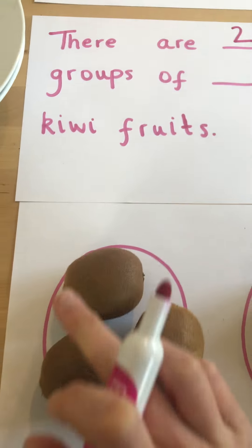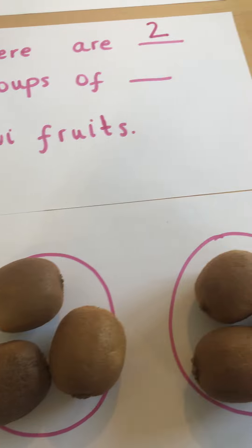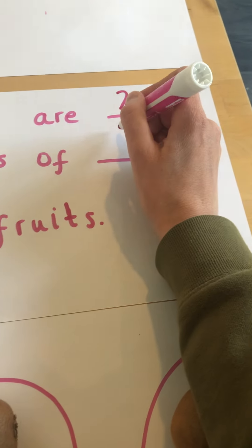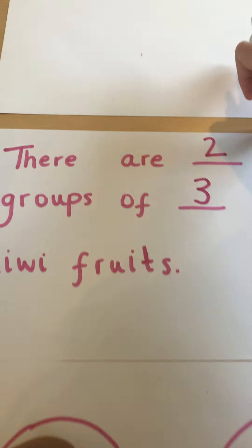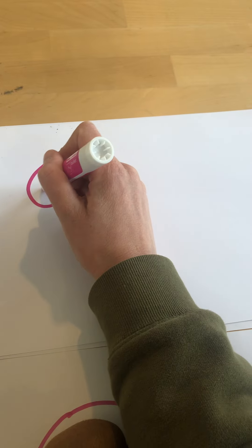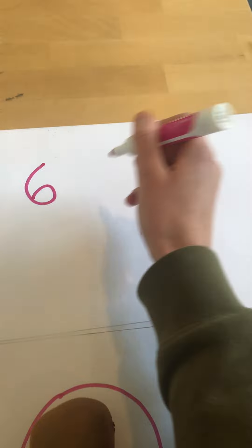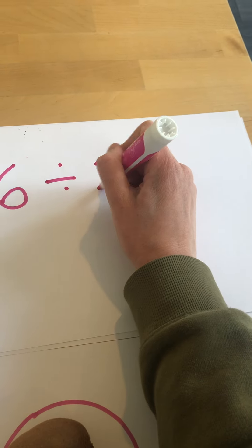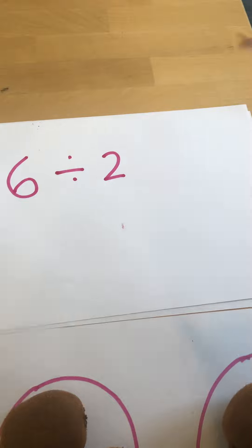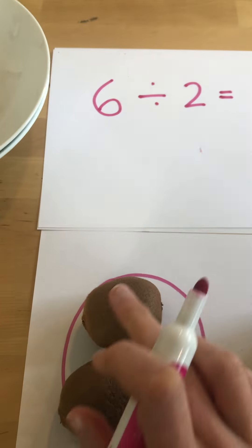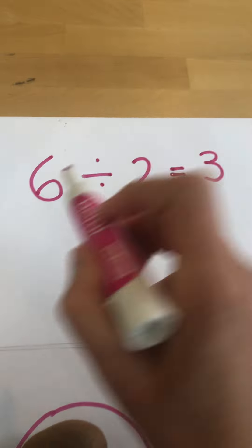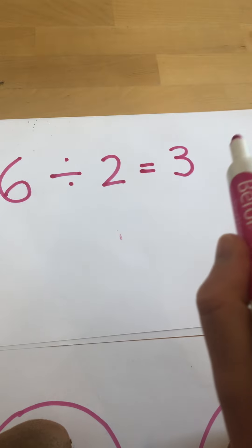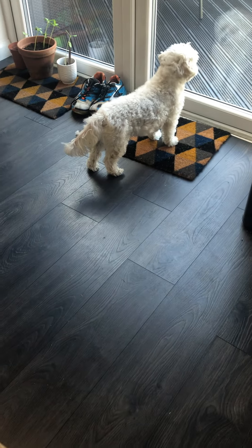There are two groups of one, two, three. There are two groups of three kiwi fruits. Shall we try and write this tricky number sentence? We started with six kiwi fruits, divided them into two groups, and how many are in each group? One, two, three. So the answer is three: six divided by two equals three.